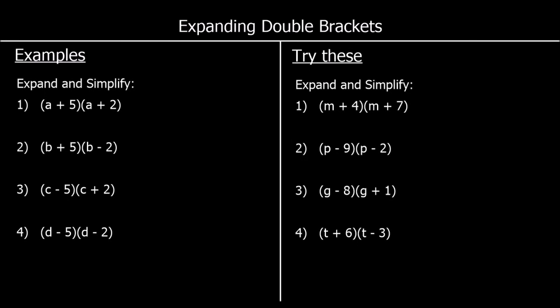In these questions we are being asked to expand double brackets. The question says expand and simplify — expand means get rid of the brackets and simplify means collect the like terms. So we're going to expand the brackets, get rid of the brackets, and then collect the like terms afterwards to simplify it. When we expand double brackets, we've got the whole of the first bracket multiplied by the whole of the second bracket.